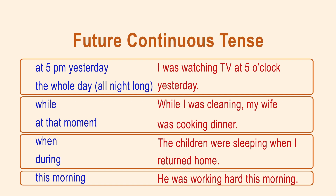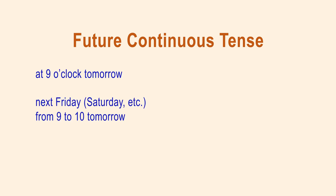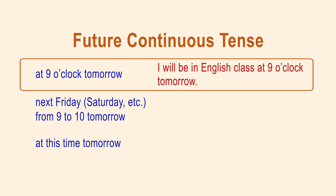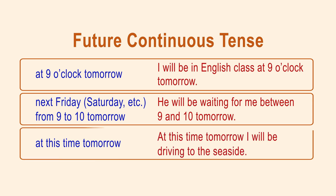You can define the future continuous tense by the following time markers: at 9pm tomorrow, next Friday from 9 to 10, at this time tomorrow. Here are the examples: I will be in English class at 9pm tomorrow. He will be waiting for me between 9 and 10 tomorrow. At this time tomorrow, I will be driving to the seaside.